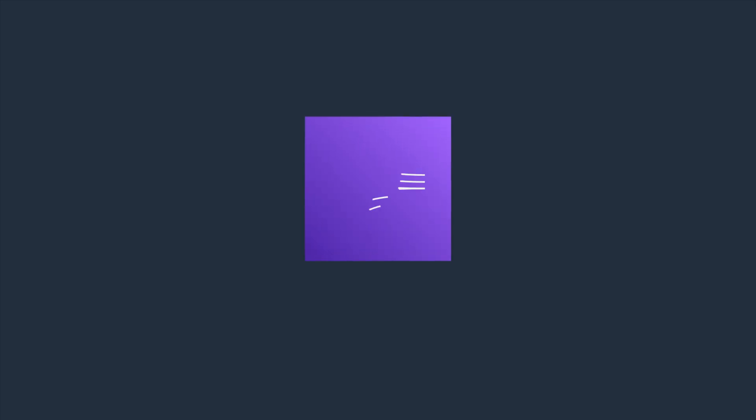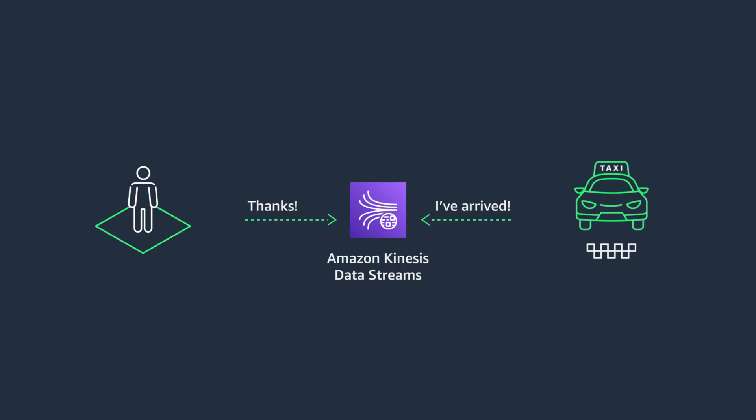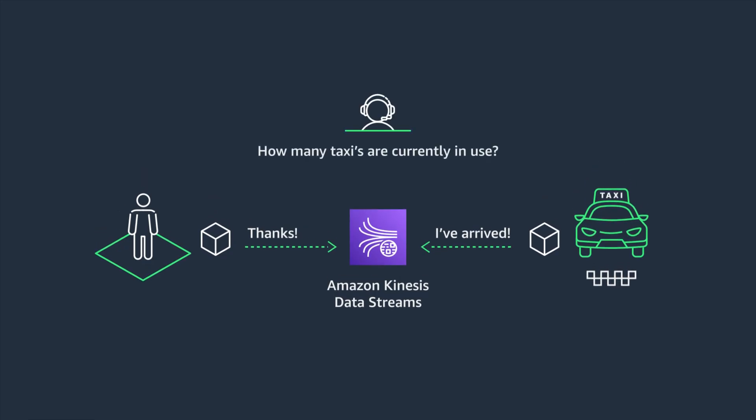And as we add new features to these applications, we realize there may be other services that are interested in those events. Kinesis is a massively scalable and durable real-time data streaming service, so it's actually well suited for this task. One of the key advantages of using Kinesis in this example is that we can have multiple consumers reading from the stream. We simply add another application to start reading the events from the stream, and that application can perform another action such as gathering real-time stats about how many taxis are currently booked.